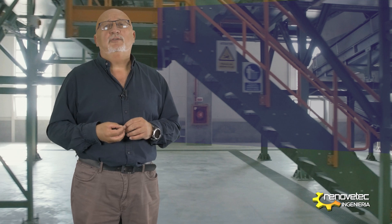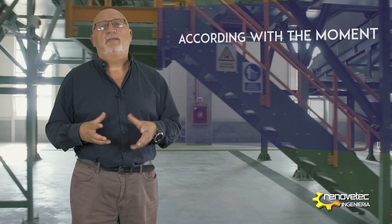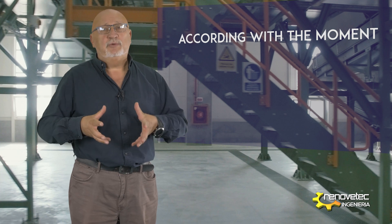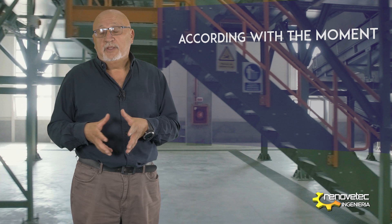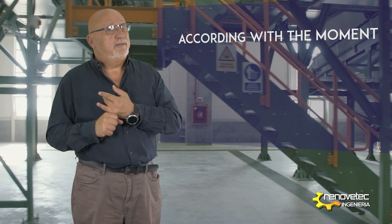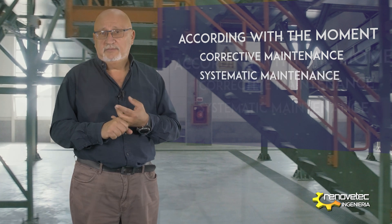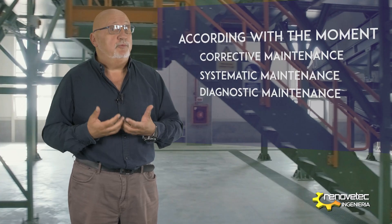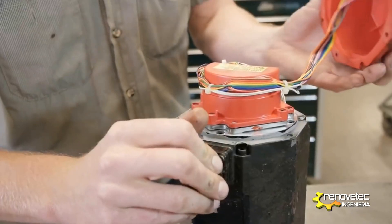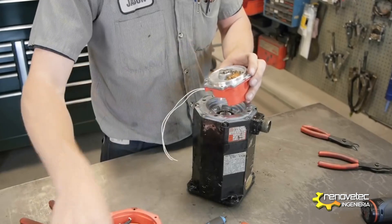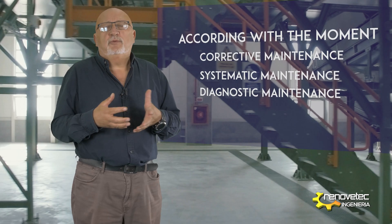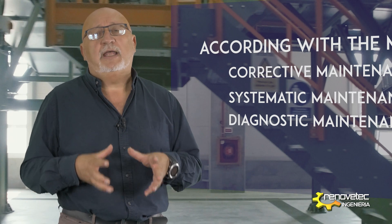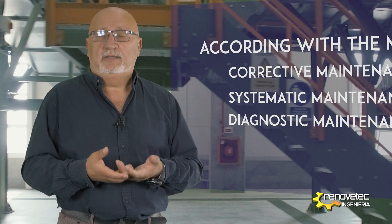There is another classification according with the moment when the failure occurs. We can have corrective maintenance, systematic maintenance, and diagnostic maintenance. The corrective maintenance is the task that we carry out once the failure has happened. The second type — what we call preventive or systematic maintenance — is what we do before the failure happens in order to avoid the failure.